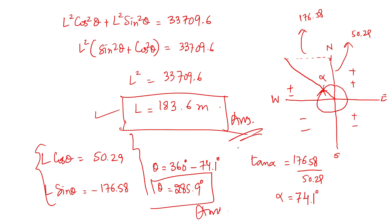This is how the calculation of omitted measurement is done when the length and bearing of all other lines are given but one line's data is missing. Using these calculations we can determine the missing length and bearing. I hope you now understand how to determine the length and bearing of an omitted line. If you have any difficulty understanding the calculations — such as how the quadrants work or why latitudes and departures are positive or negative — please refer to my previous videos. Thank you for watching.